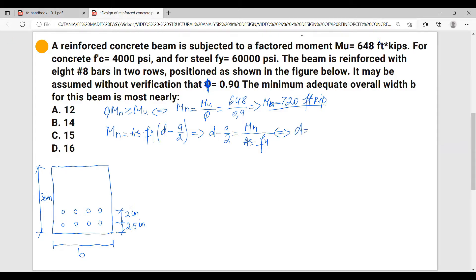And from here, d minus a/2 equals Mn over As times fy. And from here it results that a equals 2 times d minus Mn over As times fy.